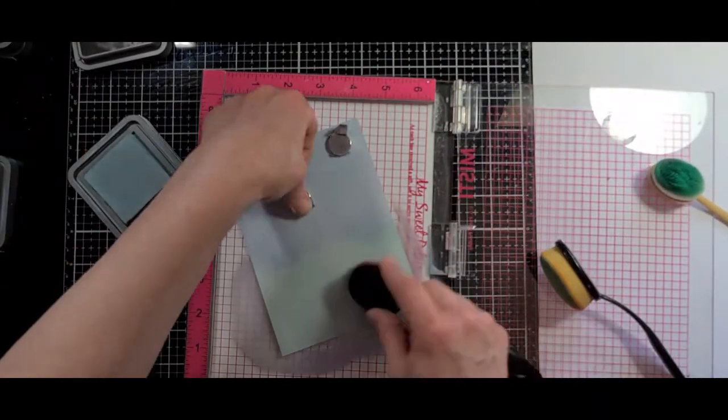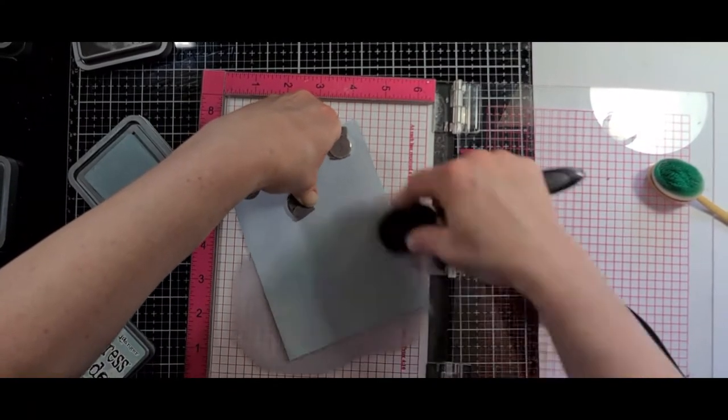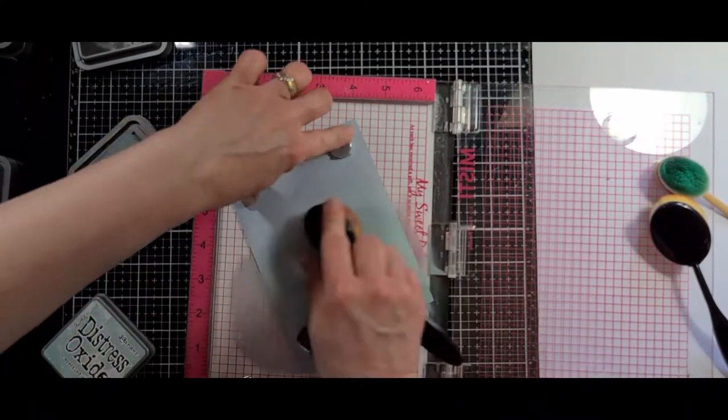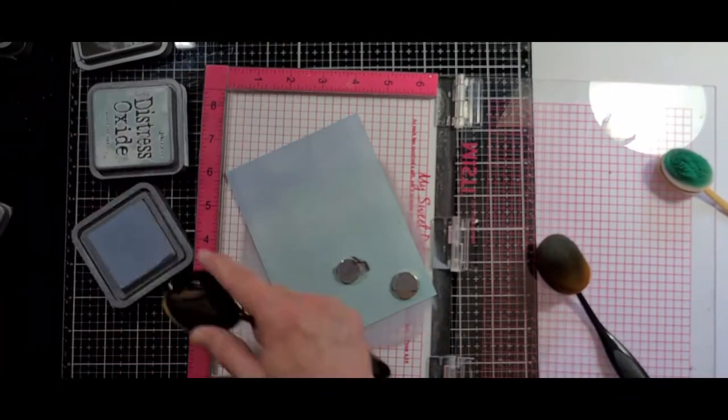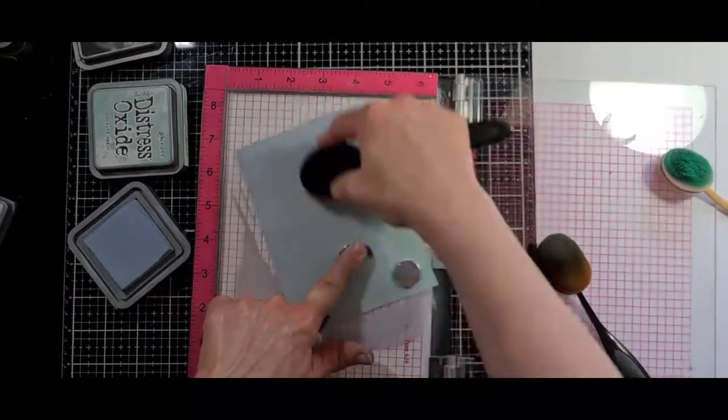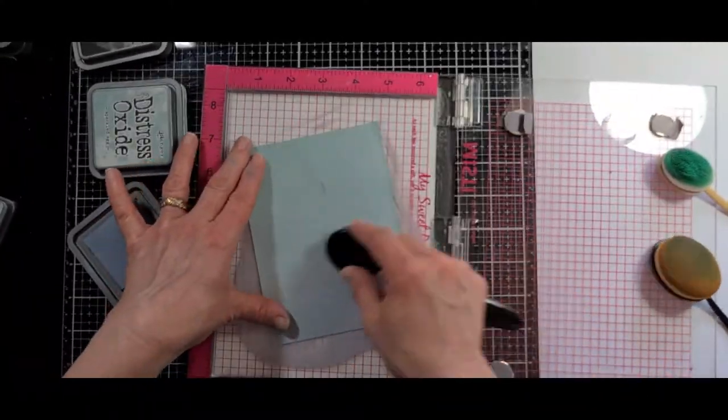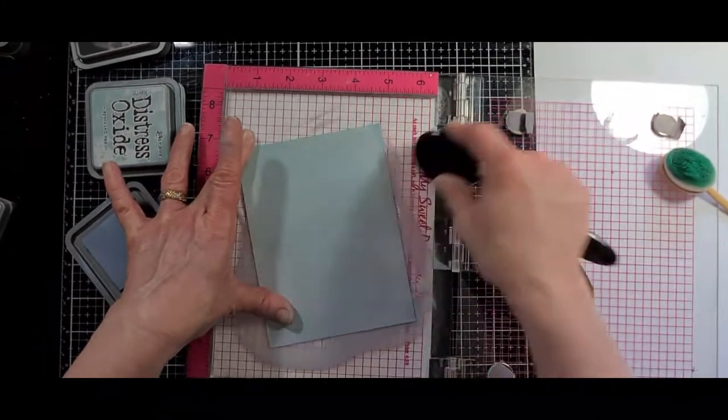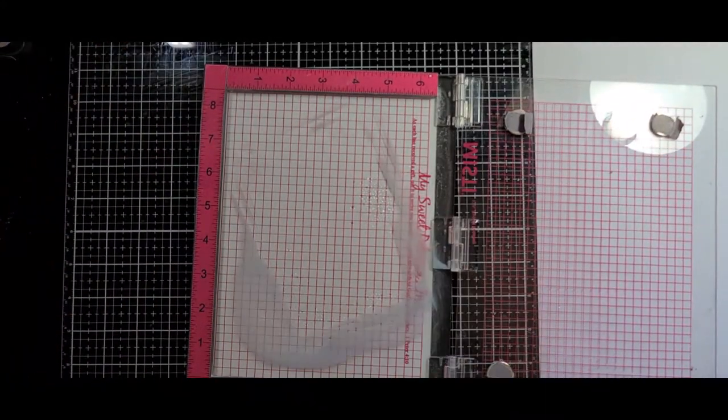So again, with my next one, I used Stormy Sky and Speckled Egg Distress Oxide inks. And I just went in from either end with both of the inks until I had a nice blend in the middle of the two. And in between my ink panels going from one to the next, I did wipe off any ink that was on the MISTI, so I didn't transfer any of that ink onto my next panel.